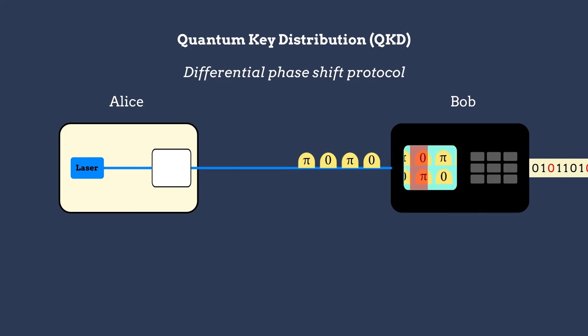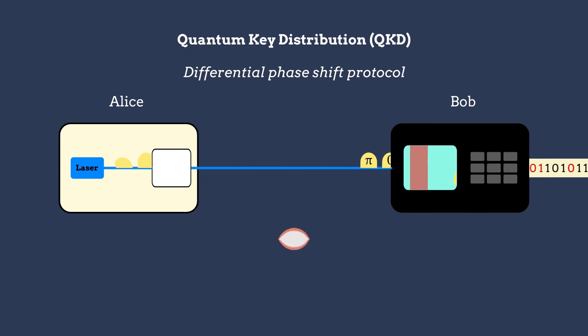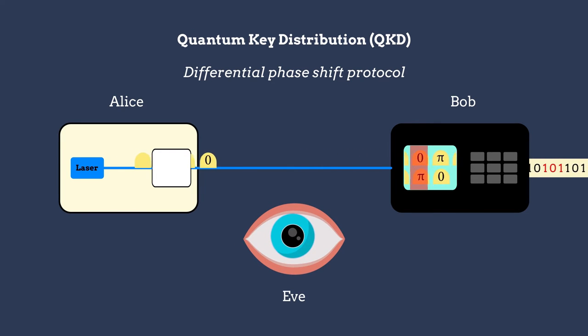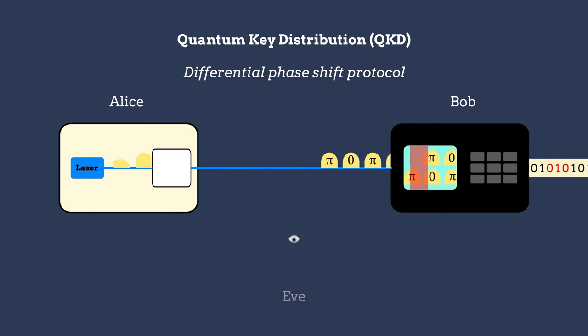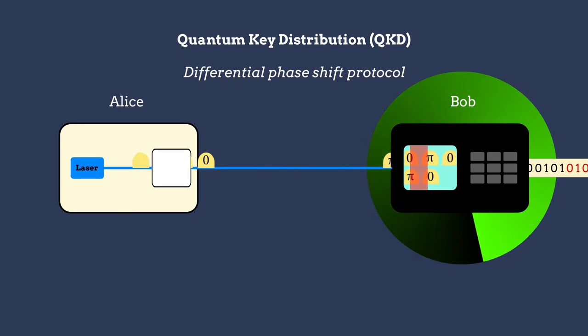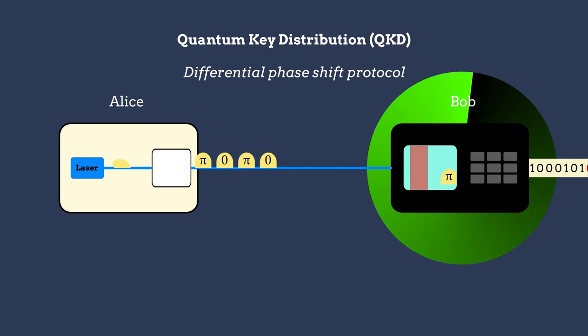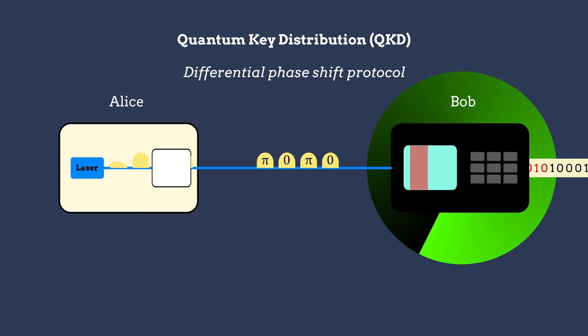The drawback, however, is that these QKD systems must continuously monitor the level of signal disturbance caused by an eavesdropper, which can compromise communication if the disturbance is large enough.